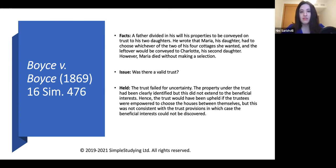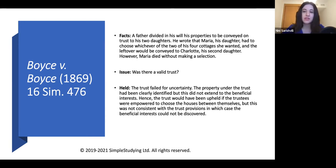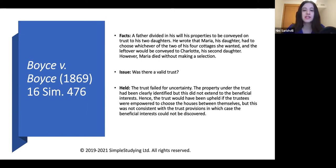In Boyes v. Boyes, a father divided in his will his properties to be conveyed in trust to his two daughters. He wrote that Maria, his daughter, had to choose whichever two of his four properties she wanted, and the remainder would be conveyed to Charlotte, his second daughter. However, Maria died without making a selection. The trust obviously failed for uncertainty because the property itself was not clearly identified.